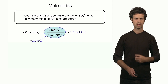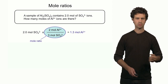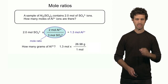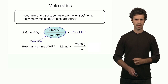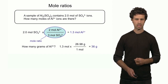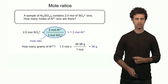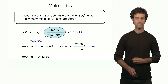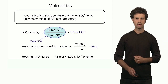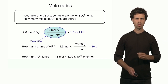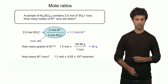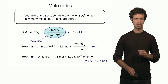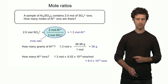Now, once I have these 1.3 moles of aluminum ions, I can perform subsequent calculations. For instance, I can determine how many grams of aluminum ions I have by taking the amount of moles and multiplying that by the molar mass of aluminum, finding 36 grams of aluminum ions. Or, I can calculate the actual number of aluminum ions by taking the amount of moles times 6.02 times 10 to the 23, to find 8.0 times 10 to the 23 aluminum ions in this case.